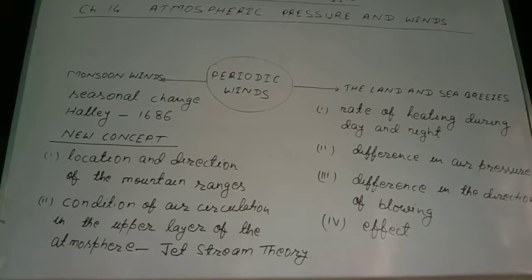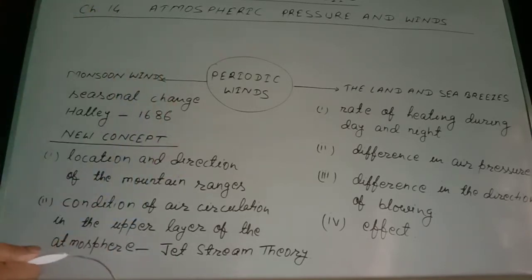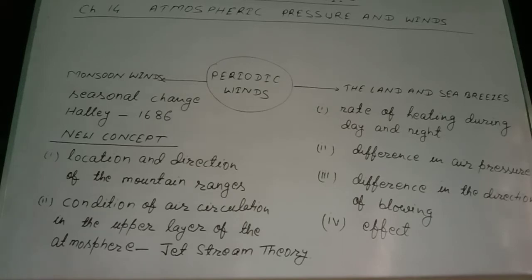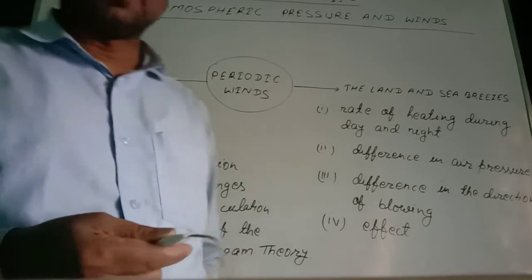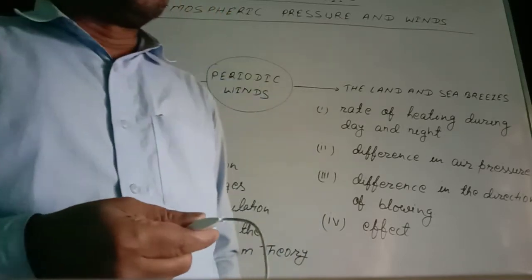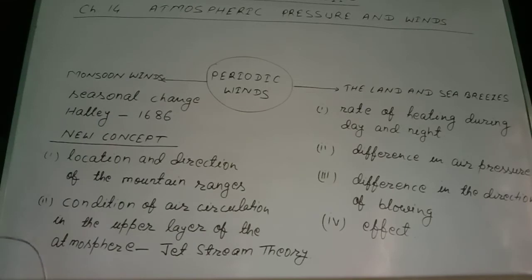Good morning, listeners of class 9B. Chapter 14 in geography, 'Atmospheric Pressure and Winds', is continued. In the last video class we completed permanent winds — trade winds, westerlies, and polar winds. Now in this video class we will discuss periodic winds. There are different types of winds affected by several factors, and those are the kinds of winds we are studying: first, permanent winds; second, periodic winds.